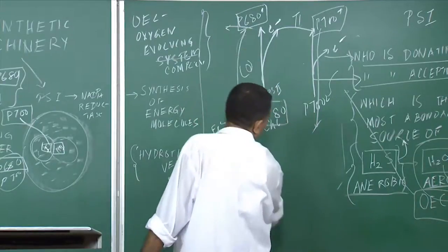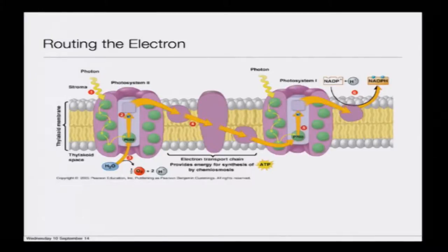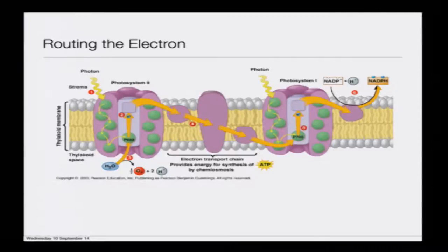In nutshell: from PS2 (P680), the ejected electron eventually reduces the P700 free radical back to its ground state. P680* (in excess positive state) is supplied with an electron from water, bringing it back to its ground state. Following the slide: at P680, light ejects an electron that traverses through three different complexes — the electron transport chain — providing energy for synthesis of ATP by chemiosmosis. Then this electron brings back P700, which had simultaneously become oxidized.